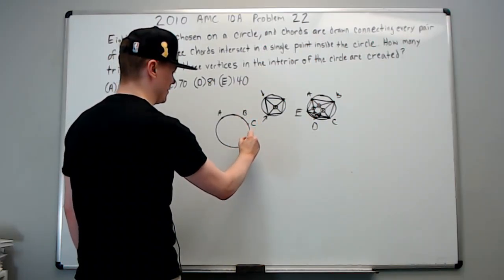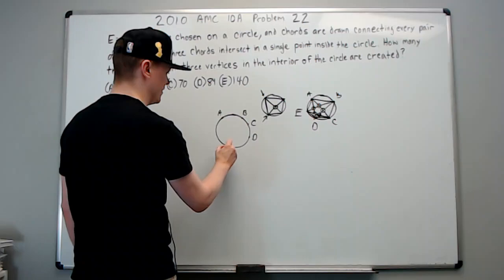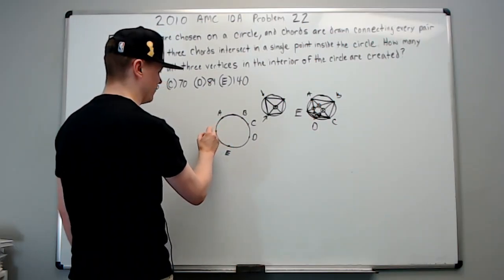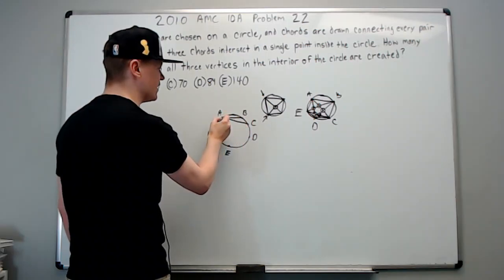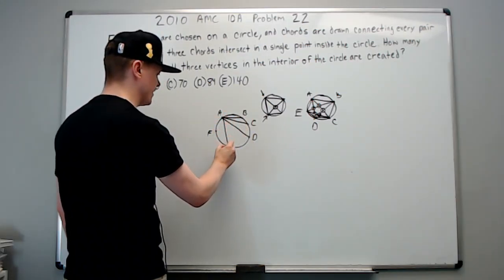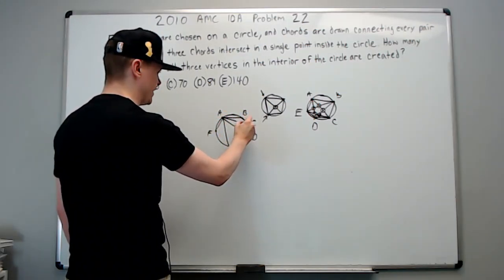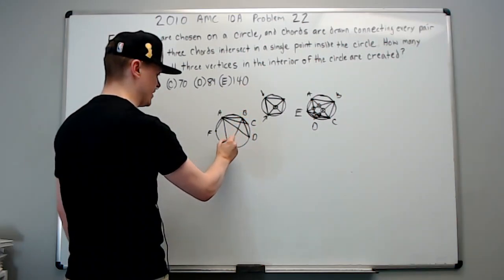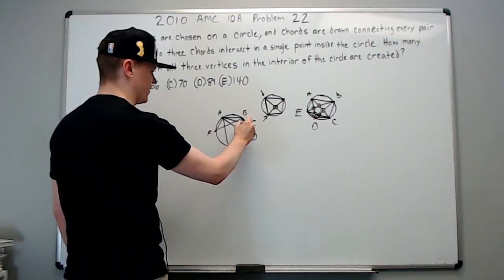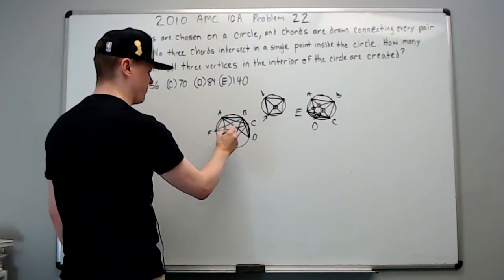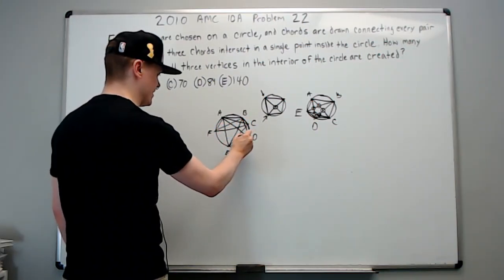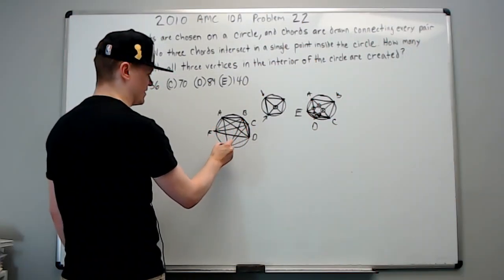So we'll put C right here, D right here, E over here, and F over here. Let's see if that helps. So A to B, A to C, A to D, E and F, B to C, B to D, B to E, B to F, C to D, C to E, C to F, D to E, D to F, and E to F.